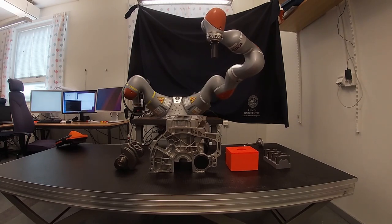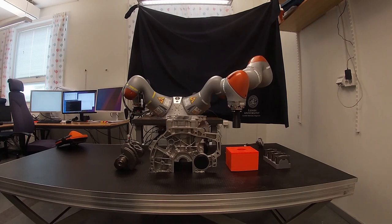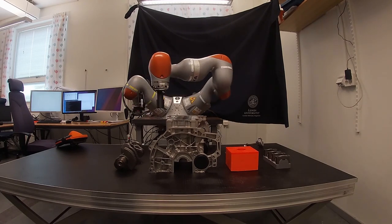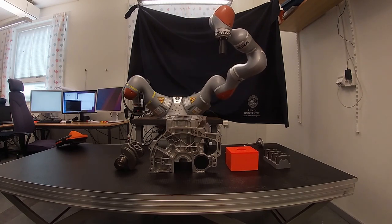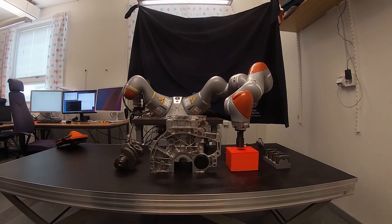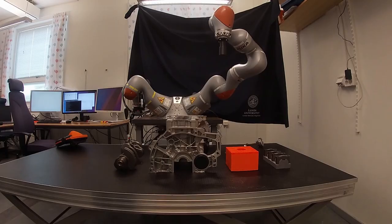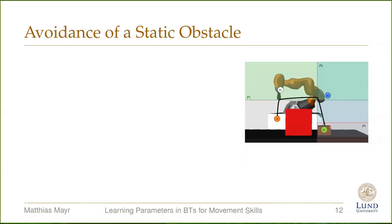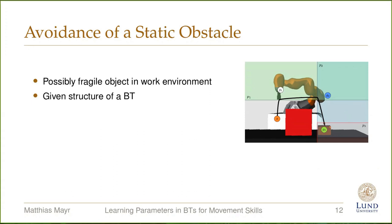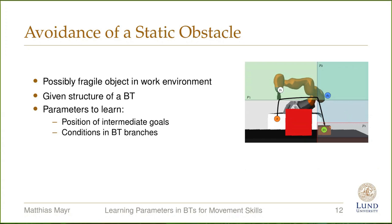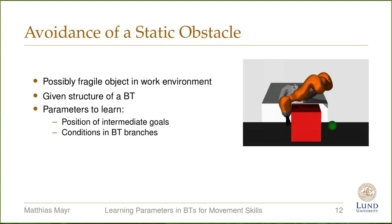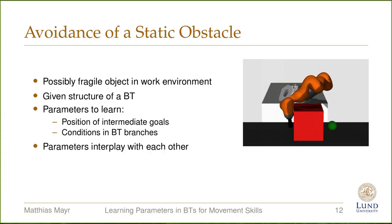We evaluate our approach with a KUKA LWR 7 degree-of-freedom manipulator. The robot is controlled by our own implementation of the motion generator. The goal is to reach a target position on the other side of an obstacle and perform a peg insertion on that side. In order for the task to succeed, two parameters in the behavior tree and several movement skill parameters need to be learned. The first subtask includes learning to avoid a static obstacle. Such an obstacle could be fragile and collisions could damage the object, the tools, or the manipulator itself. The structure of the behavior tree is provided, but several parameters need to be learned, including both the positions of intermediate goals as well as the conditions of the branches. It is important to note that the parameters interplay with each other in order to perform the final trajectory.